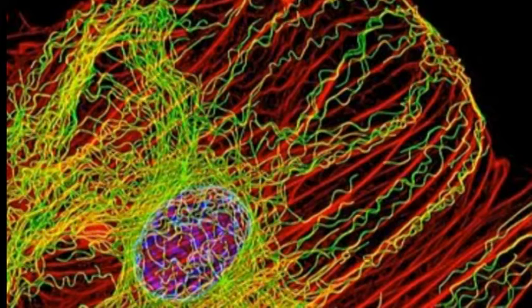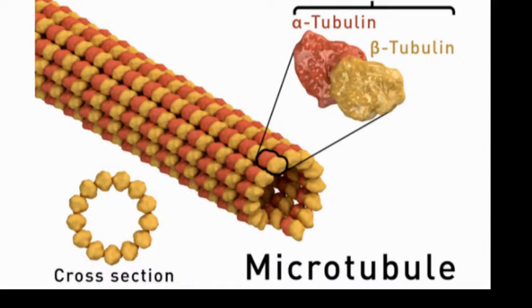All living cells contain a cytoskeleton. It controls the shape and the movement of the cell. It is made up of microtubules and filaments.